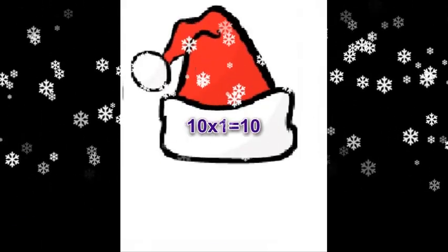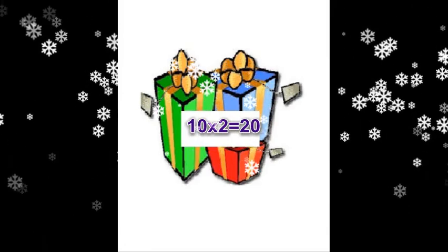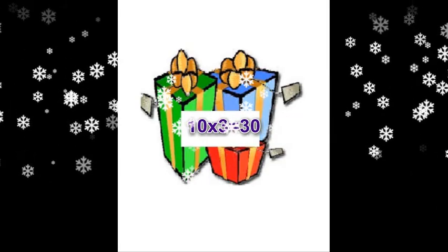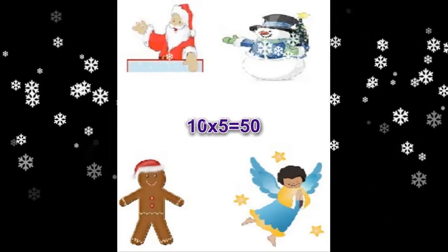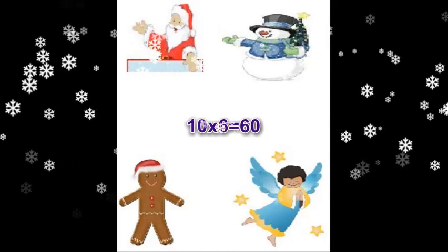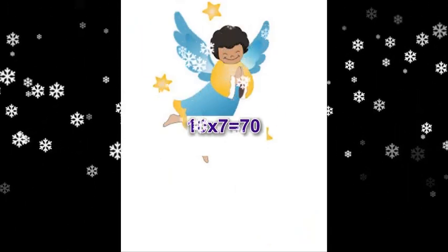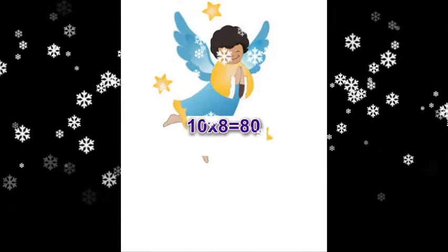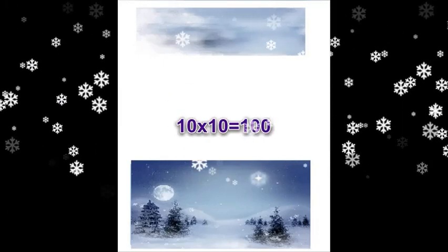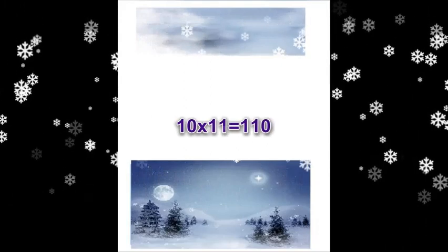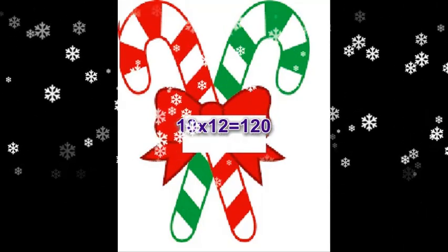Again. Ten times one equals ten. Ten times two equals twenty. Ten times three equals thirty. Ten times four equals forty. Ten times five equals fifty. Ten times six equals sixty. Ten times seven equals seventy. Ten times eight equals eighty. Ten times nine equals ninety. Ten times ten equals one hundred. Ten times eleven equals one hundred ten. Ten times twelve equals one hundred twenty.